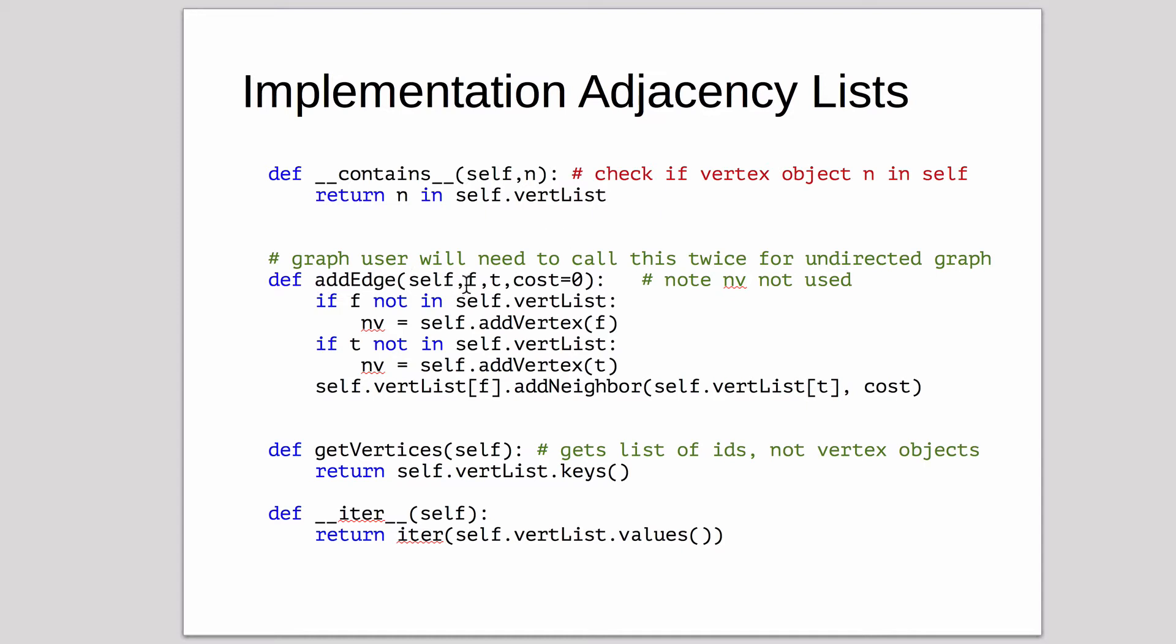AddEdge adds an edge. We have a from and to and an optional cost. So first, if these aren't already in the vertex list, it adds them. Here, and then here.